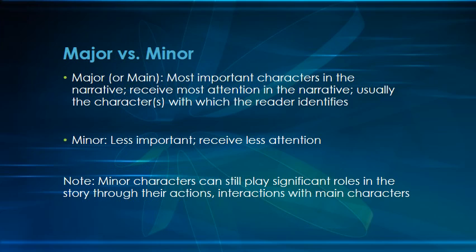Major characters, or main characters, are the most important ones in the story — they receive the most attention and are usually the characters that we as readers identify with. Minor characters are less important; they receive less attention and are ones we may not be as invested in — sidekicks and so forth. However, minor characters can still play very important roles through their actions and interactions with main characters. For example, the apothecary who sells the poison in Romeo and Juliet, even though he's only in the play briefly, still plays a very important role because of the action he performs.